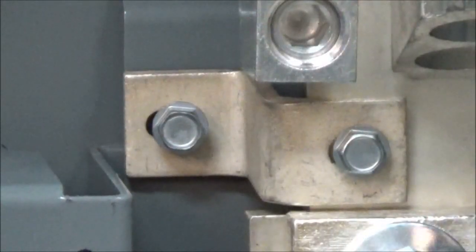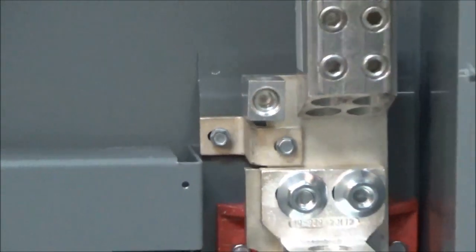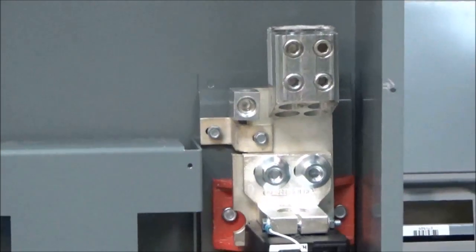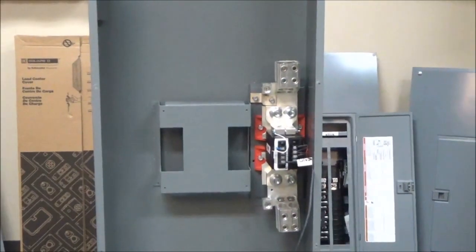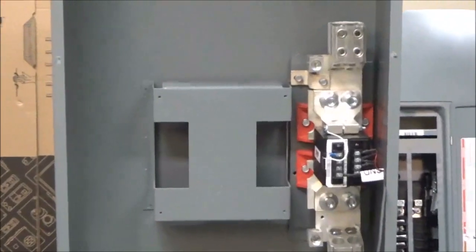You now have your neutral CT and neutral CT mounting kit mounted to the enclosure and you are ready to install the breaker and use as a ground fault breaker.